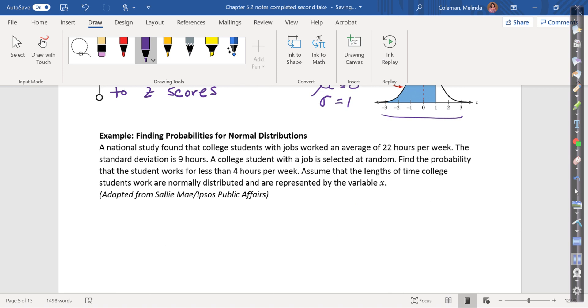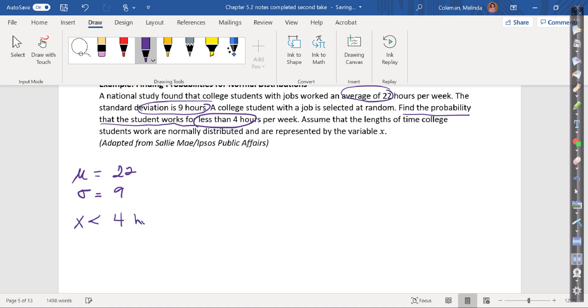First example: A national study found that college students worked an average of 22 hours per week. The standard deviation is nine hours. So the average is 23, standard deviation is nine. A college student with a job is selected at random. Find the probability that student works for less than four hours. So in this case x is going to be less than four hours.